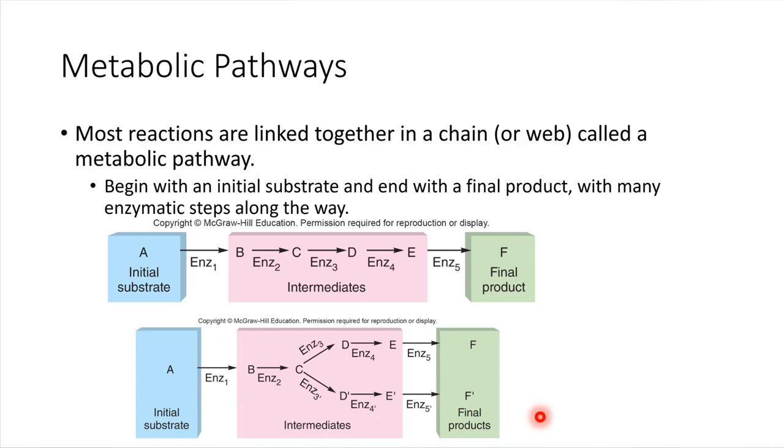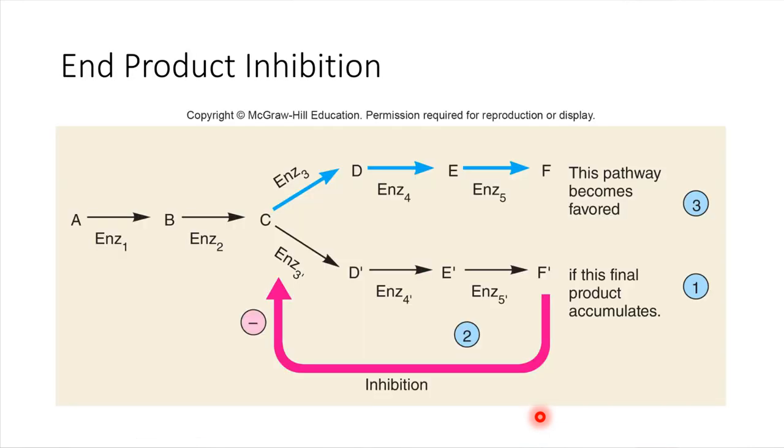End product inhibition is what this is called. That name will make sense in just a minute. Let's follow this pathway. This is a metabolic pathway where we start with molecule A, substrate A, and that gets modified by this enzyme to form substrate B, which gets modified by this enzyme to form substrate C.